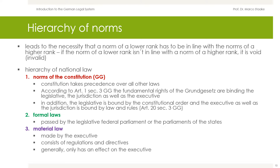The rank under the Constitution is formed by the so-called formal laws. These are laws that are passed by the legislative federal parliament or the parliament of the states. Formal law also deals with the ways in which the law is enforced — procedural and process law as well as jurisdictional rules. Laws made by the executive are called material laws. The material law consists of regulations and directives and generally only has an effect on the executed. Material law tends to concern the rights and duties of legal subjects, as well as the establishment of legal institutions such as the contract, the office, or the marriage.